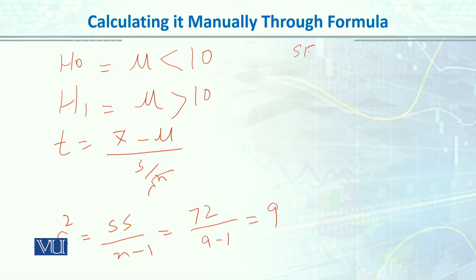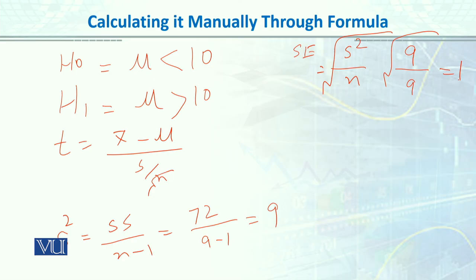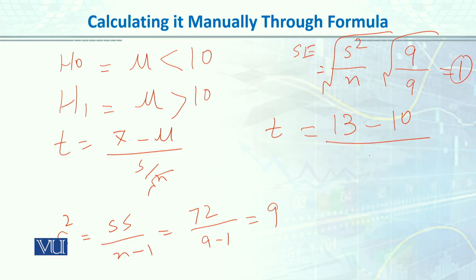Now we calculate the standard error: square root of variance over n. Variance is 9 and n is 9, so 9 divided by 9 equals 1. The standard error is 1. Plugging into the t formula: sample mean is 13 seconds, population mean is 10 seconds, standard error is 1. So t equals 3 divided by 1, which equals 3. Our calculated t is 3, and we compare this to the table value.